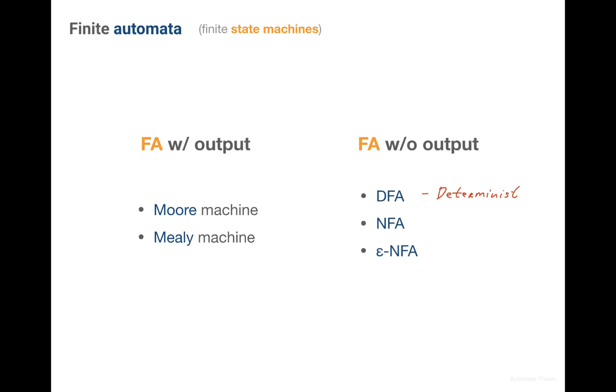Machines without output are divided into DFA, that is deterministic finite automata, NFA, non-deterministic finite automata, and Epsilon NFA, a special subtype of NFA which also allows epsilon transitions as we'll see shortly.